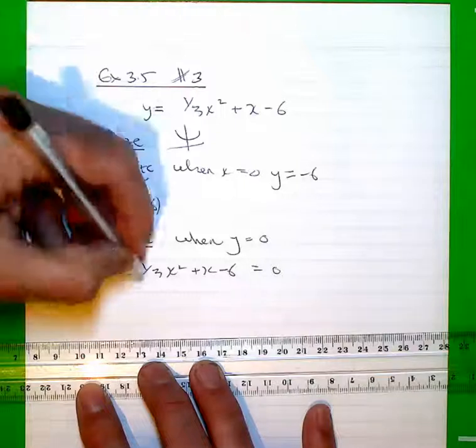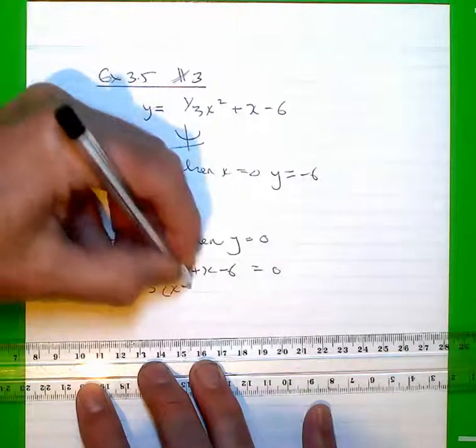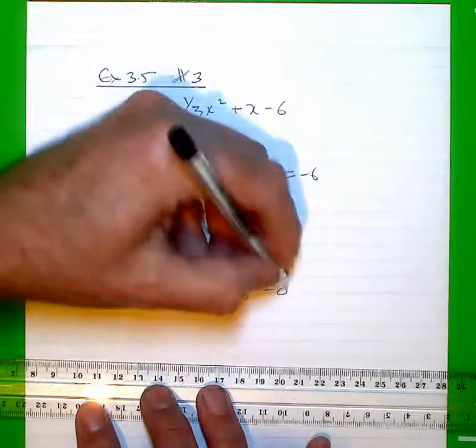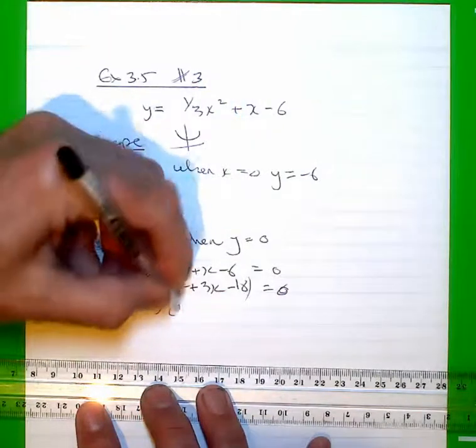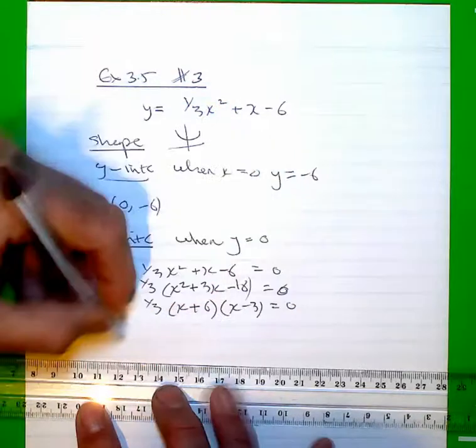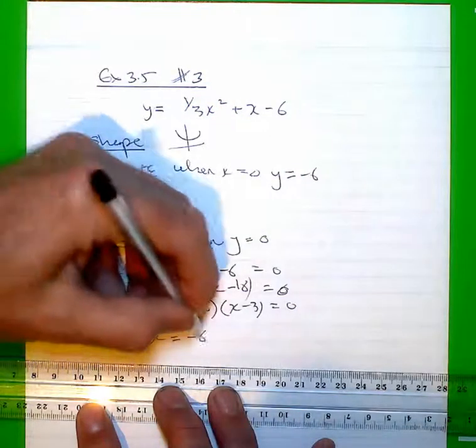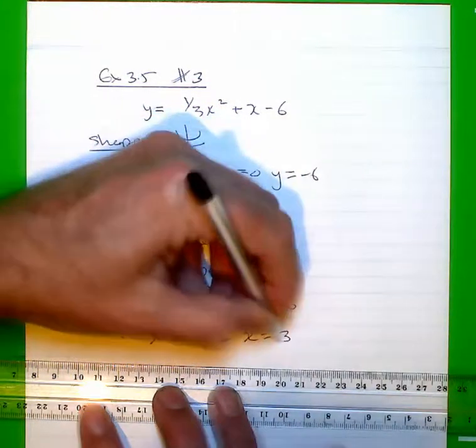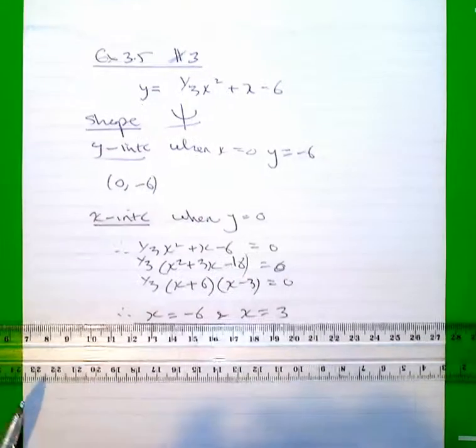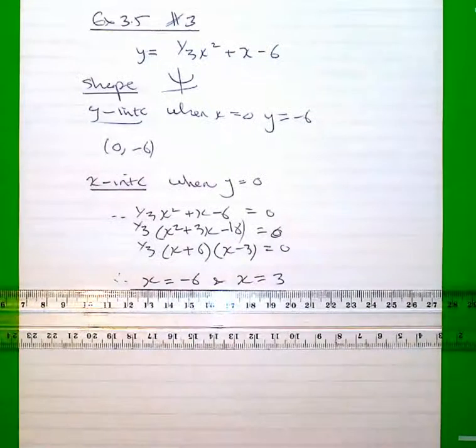I take a third out as my common factor. So I've got my X-intercepts at X is equal to negative six, and X is equal to three.